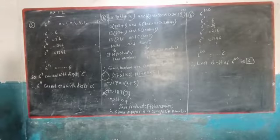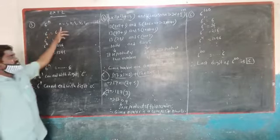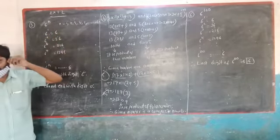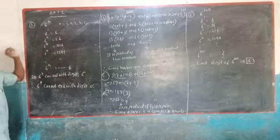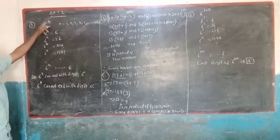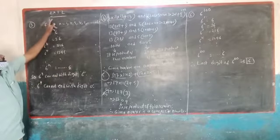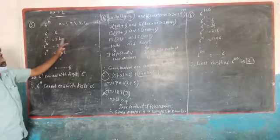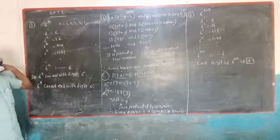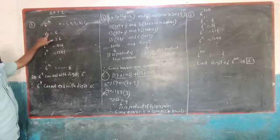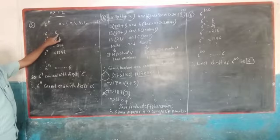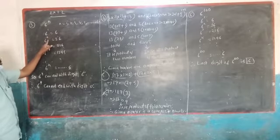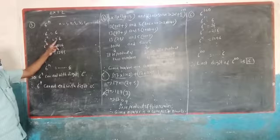Now 6^N, where N is a natural number — that is 0, 1, 2, 3, 4, etc. So now in N's place we are substituting 1, 2, 3, 4 and so on. When N=1, 6^1 is 6. Next, 6 squared is 6 into 6, that is 36.